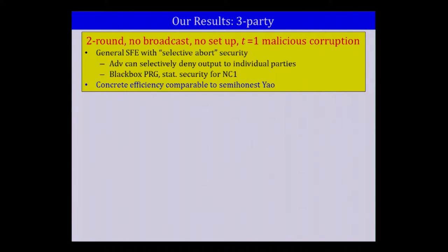Our results in the three-party setting: again, we're constructing two-round protocols with no broadcast channel, no setup, tolerating exactly one malicious corruption. We get general secure function evaluation protocols with selective abort security, meaning the adversary can selectively deny output to individual honest parties — no guaranteed output delivery or fairness. We achieve this with statistical security for NC1, and for general polynomial functions, computational security with black-box use of a PRG. A remarkable point is that the concrete efficiency is comparable to that of semi-honest Yao — despite tolerating one malicious corruption.